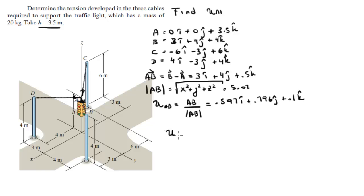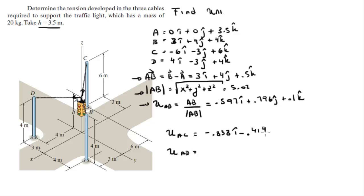Now go through the same motions to find unit vectors AC and AD. When you find vector AC, compute its magnitude and divide, you get unit vector AC equal to -0.838i - 0.419j + 0.349k. Unit vector AD comes out to be 0.796i - 0.597j + 0.1k.